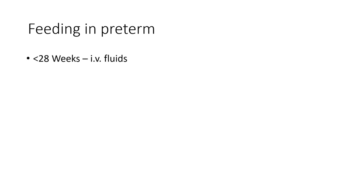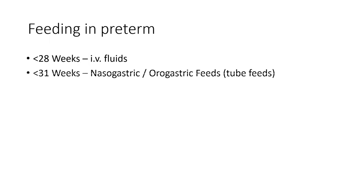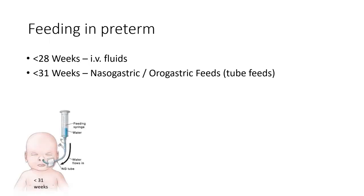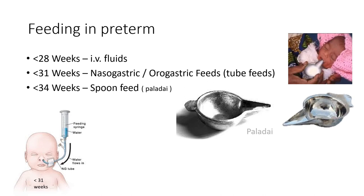Feeding in preterm neonates depends on the period of gestation. Below 28 weeks, only IV fluids are given due to gut immaturity. Between 28 and 31 weeks, feeds are given through a nasogastric tube. Between 31 and 34 weeks, spoon feeding is done using a small bird-beak-shaped container called a paladai, which delivers feeds in small amounts. After 34 weeks, the newborn has developed ingestion power, and breastfeeding can be initiated.